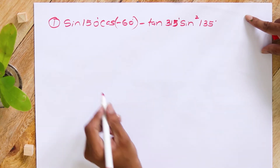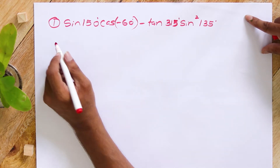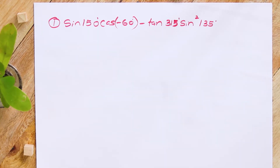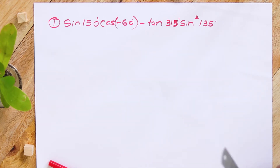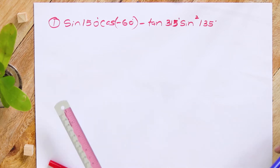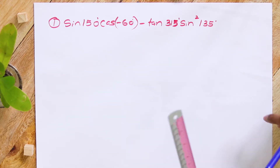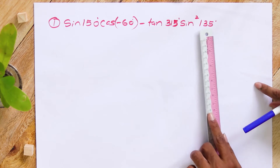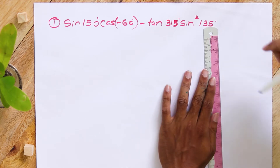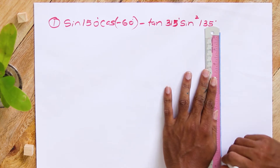Now, how to simplify this? Before we start to simplify this, the best way is to find sine 150°, cos(-60°), tan 315°, and sine squared 135° separately. That will be more convenient.